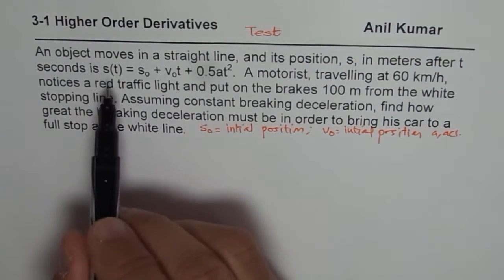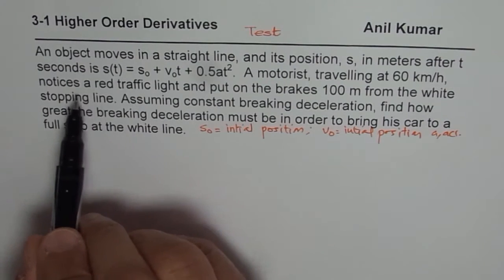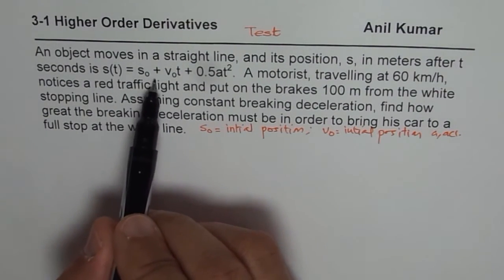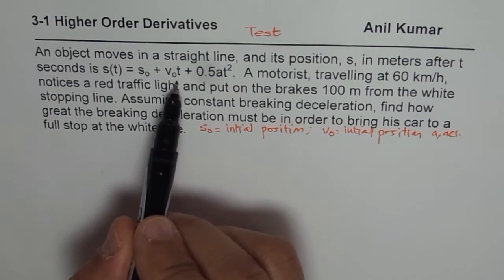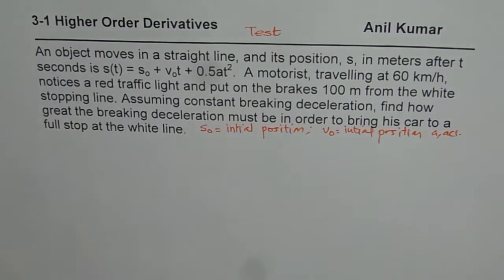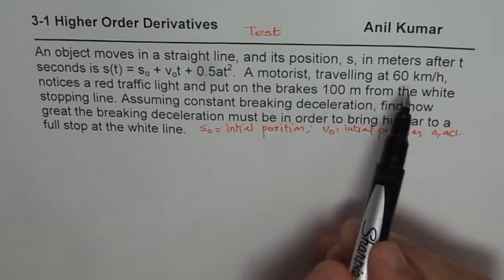So the displacement, whenever you are moving in a straight line, is given by initial displacement plus initial velocity times time plus half of at². Where a is the acceleration part. And t is time in seconds, displacement is in meters.